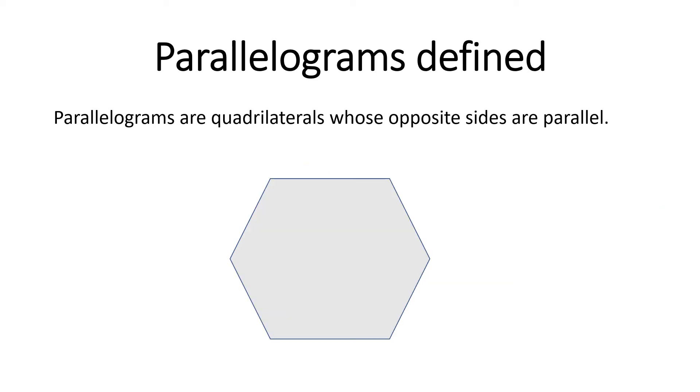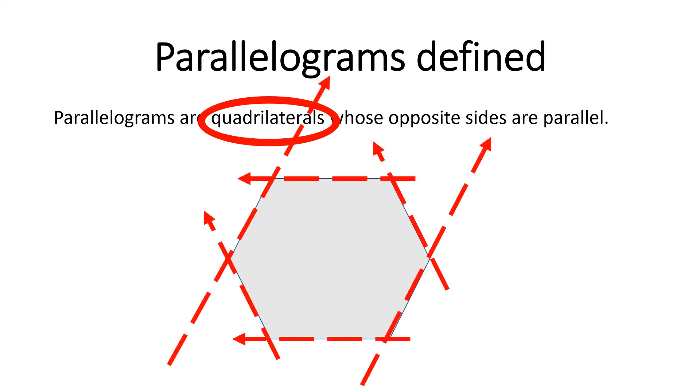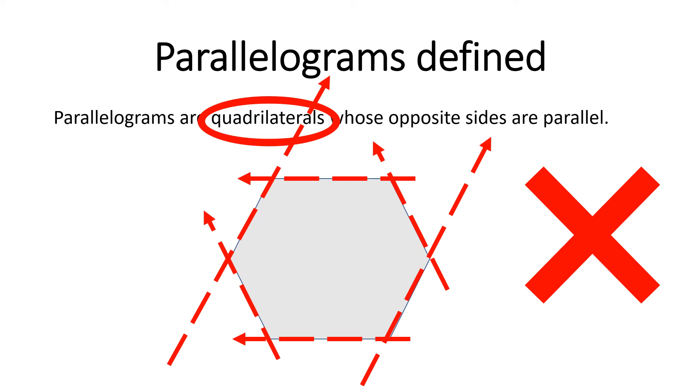Here we have a hexagon. And now the question is, is this a parallelogram? Now in order for a shape to be a parallelogram, it has to be a quadrilateral, meaning it has to have four sides. And yes, the opposite sides are parallel in this shape. But since this shape has more than four sides, it is not considered a parallelogram.